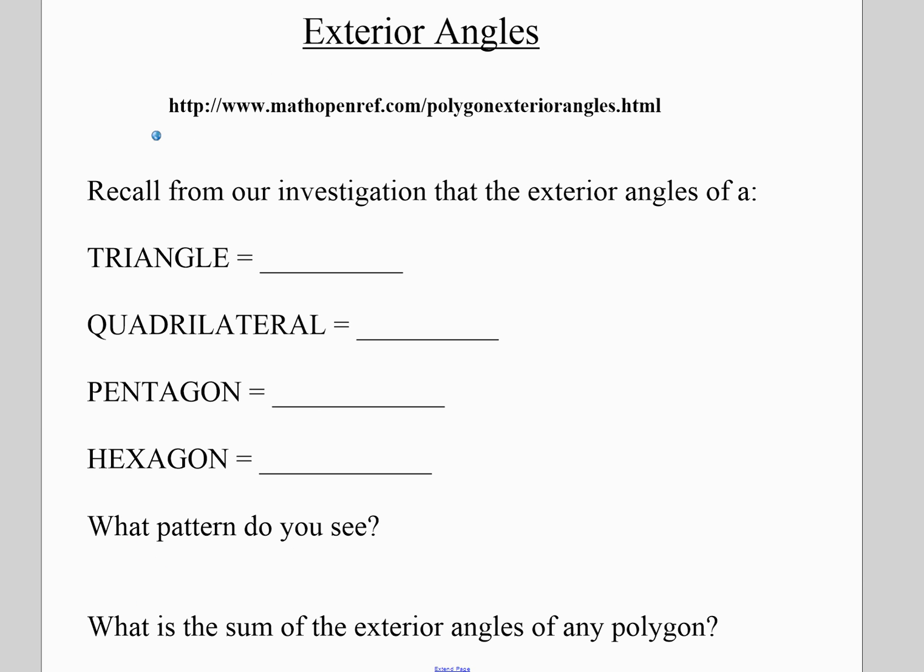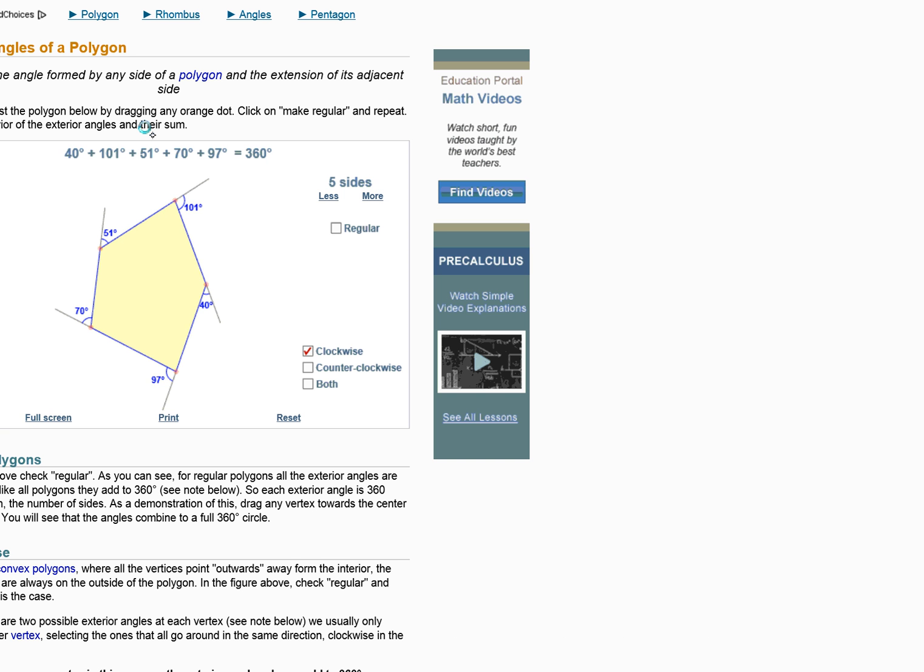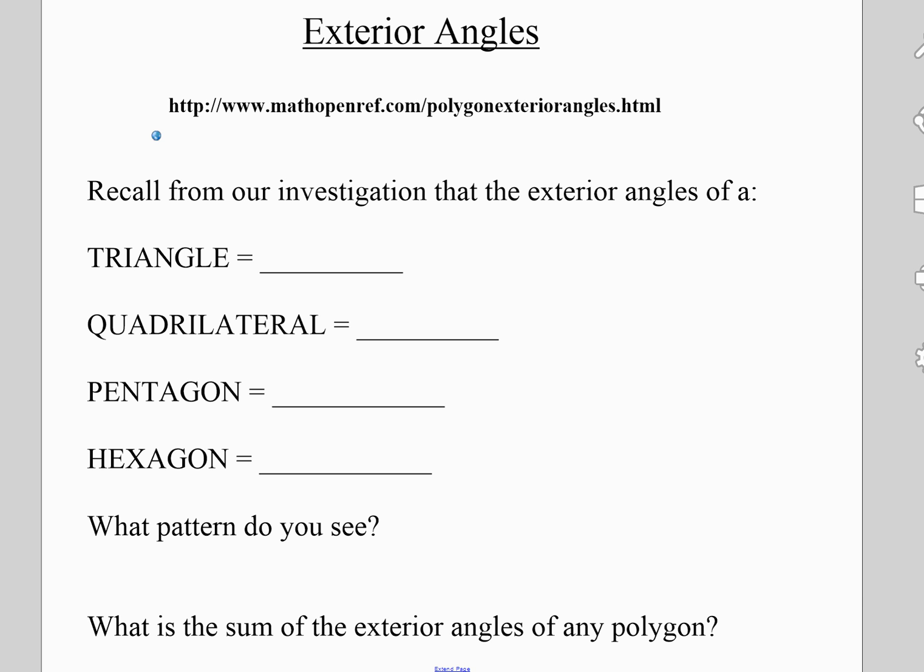Now, if we look at what you've just investigated this year about exterior angles, there's some things that you've learned about the exterior angles of a polygon. If you're interested, you can click on this link here, and it will take you to an interactive investigation. Based on the investigation that you did, you've learned that all exterior angles add up to 360 degrees.